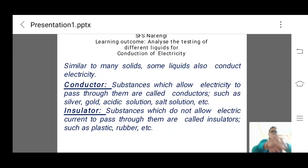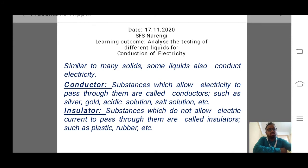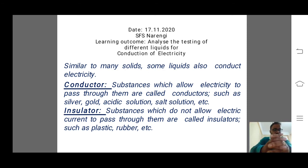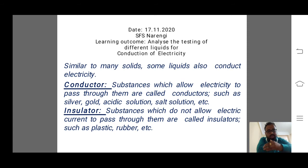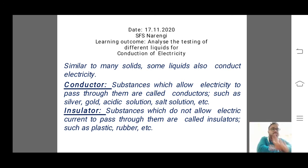Good morning students. In the last class we finished the topic chemical effects of electric current, so today we start with a revision of that chapter. We learned about conductors, insulators, who conducts electricity, what are the chemical effects, heating effect, and magnetic effect. Today's recorded class will be a quick recap of the chapter chemical effects of electric current, which we taught on 17th November. The learning outcome was to analyze the testing of different liquids for conduction of electricity.